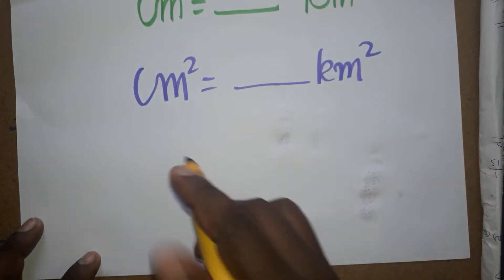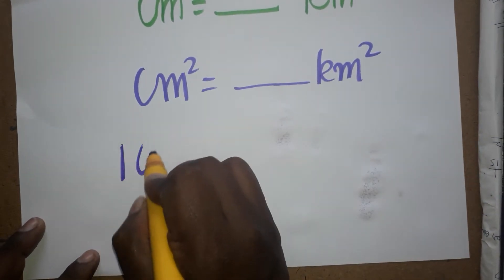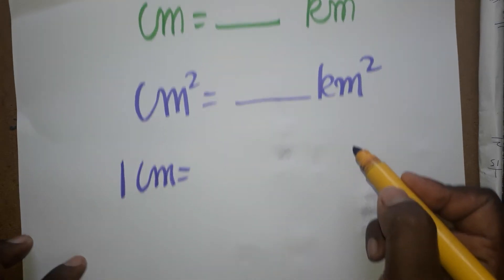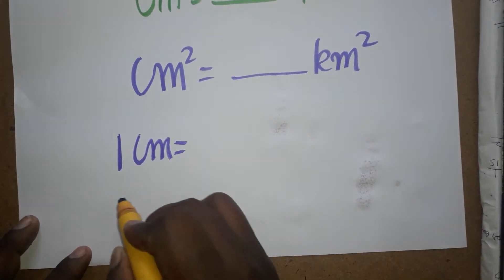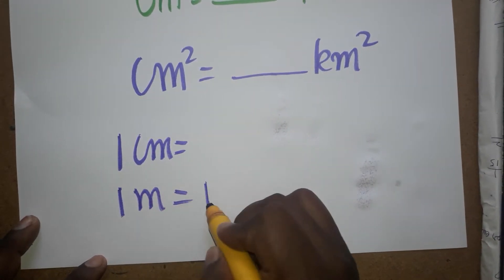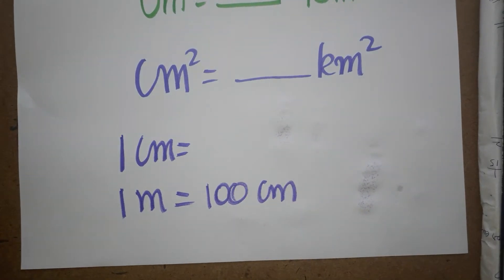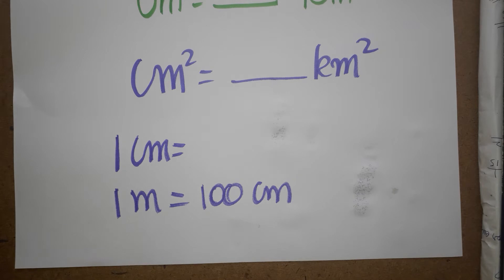I am going to relate both in meters. So 1 cm equals dash km, that is the question. Already 1 m equals 100 cm. Now 1 cm equals dash m.